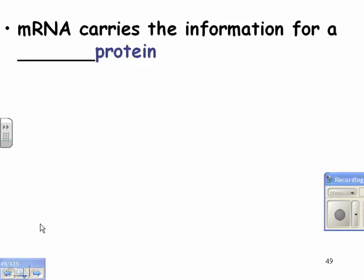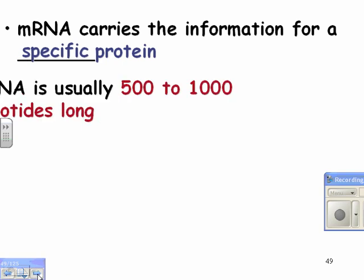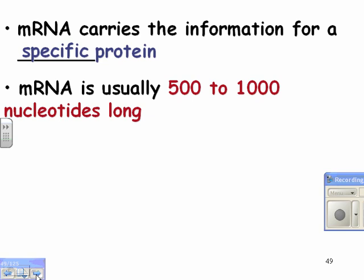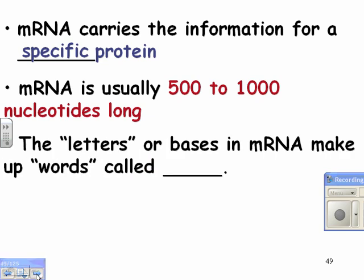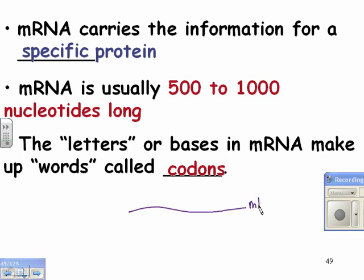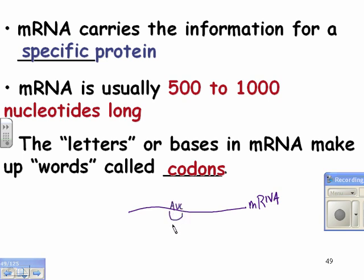Messenger RNA carries information for a specific protein, whether it's hemoglobin or insulin or whatever. mRNA is usually about 500 to 1,000 nucleotides long. The letters or bases of mRNA make words called codons. Each codon is three letters — for example, AUC — and that's a codon.